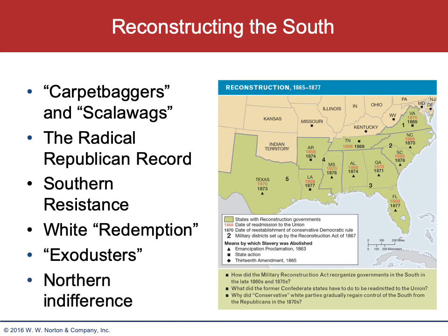None of this would have happened without Northern indifference. For many Northern whites, the real plight of African Americans was not a priority. Most white Northerners didn't even know a black person, seen one, been around one. Many people in the North really didn't think that African Americans were equal to them. Just because you don't believe somebody should be a slave doesn't mean that you think they're your equal. This is just a very formidable truth.